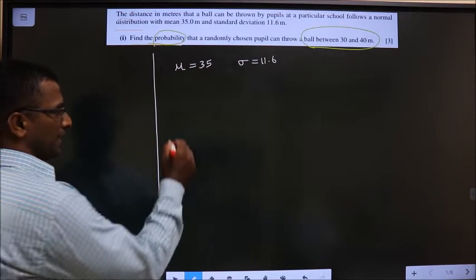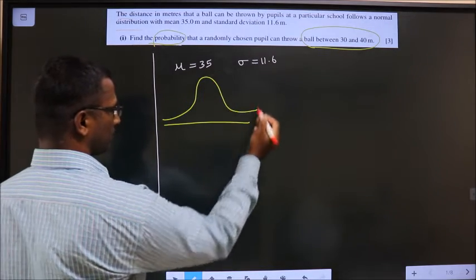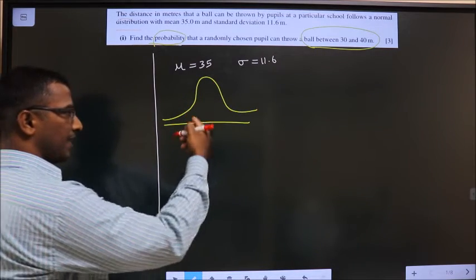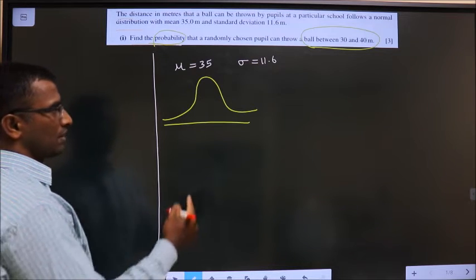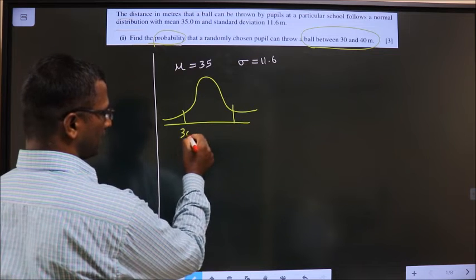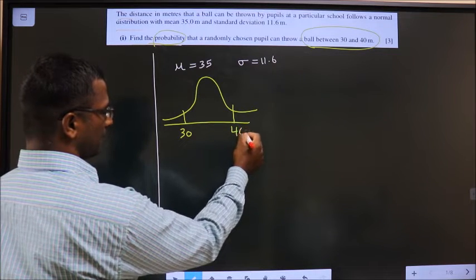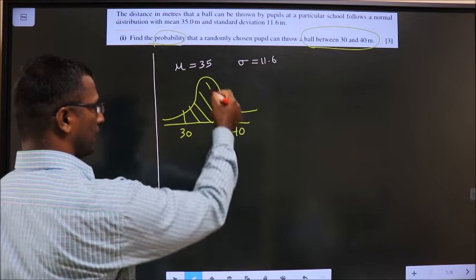So here, let us say this is normal curve. Now, area under the curve will give you the probability. So here you need to find probability between 30 and 40 means, let us say here it is 30 and here it is 40. This area is what you need to find out.